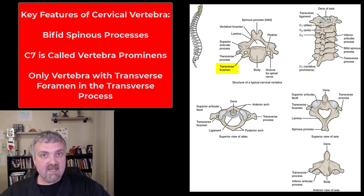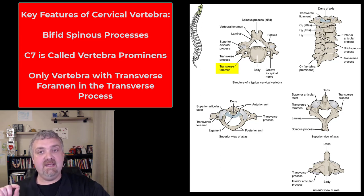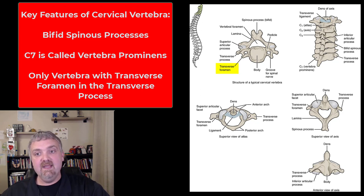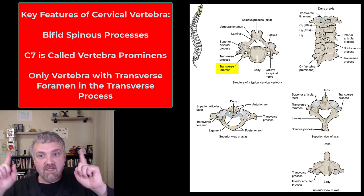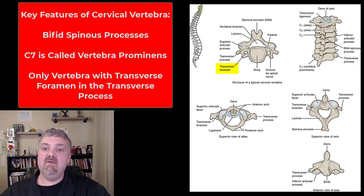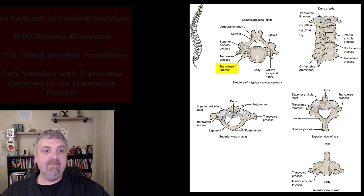The transverse process of your cervical vertebrae is also unique because of that opening — the hole called the transverse foramen. That's going to be where the vertebral artery runs up to your head. Your thoracic and lumbar vertebrae do not have that foramen, that opening.